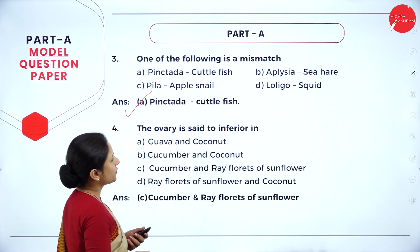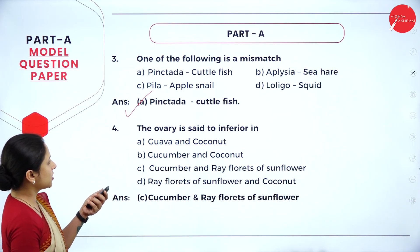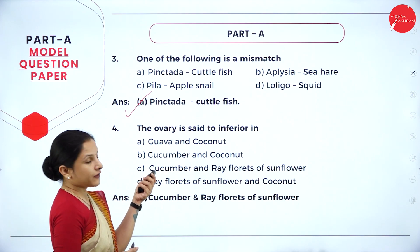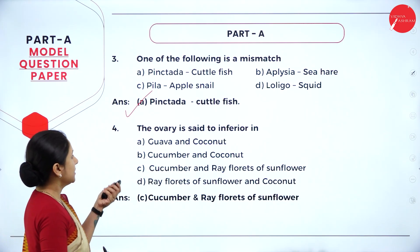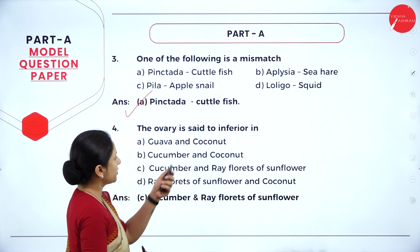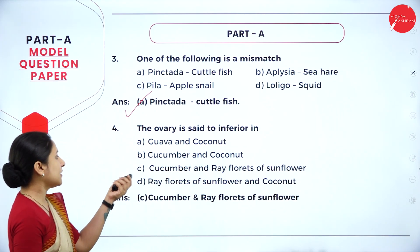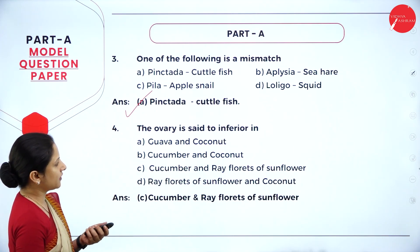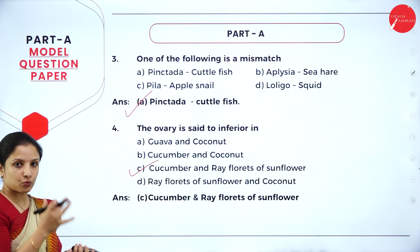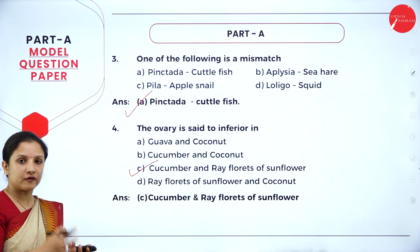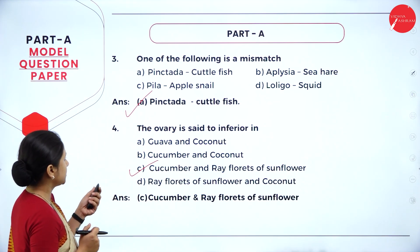Question 4: the ovary is said to be inferior (epigynous) in which plants? The options include guava and coconut, cucumber and coconut, cucumber and ray florets of sunflower, or ray florets of sunflower and coconut. The answer is cucumber and ray florets of sunflower — option C.